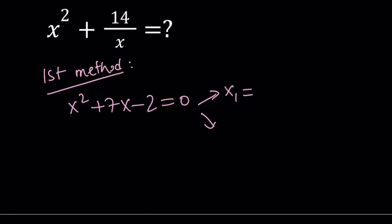x sub 1 is going to be negative b plus square root of b squared, which is 49, plus minus 4ac. That's going to become 57, divided by 2. And the other solution is going to be negative 7 minus square root of 57 over 2.